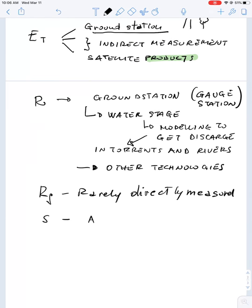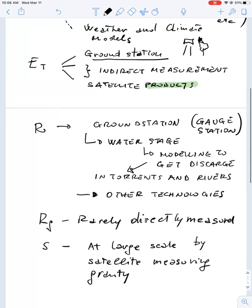For instance, at large scale, by satellites, gravimetric satellites. In fact, when it rains, what happens is that the weight of the surface with water is more heavy, and this can be detected as a change in the gravity. And there are some satellites that can measure it at large scale.